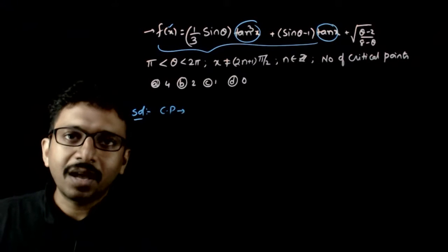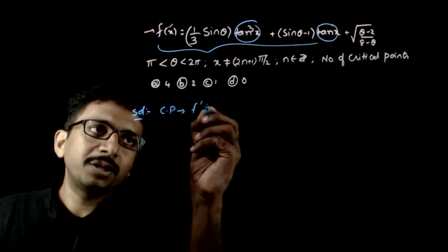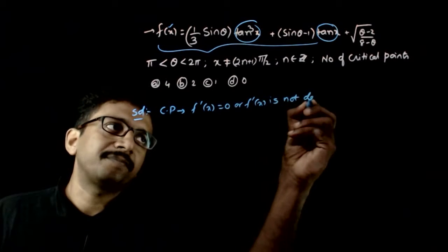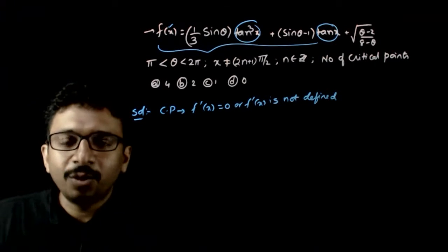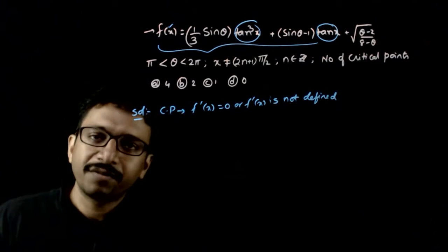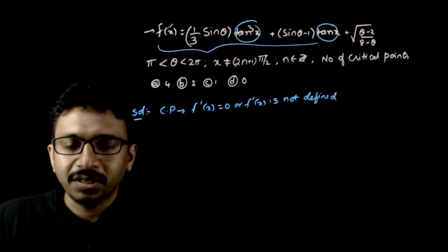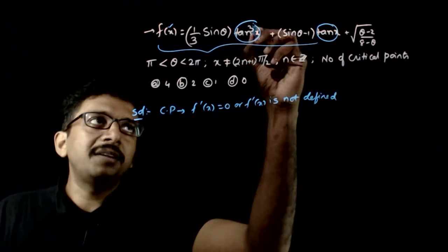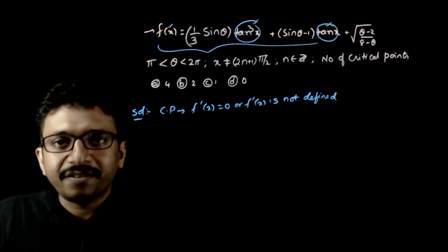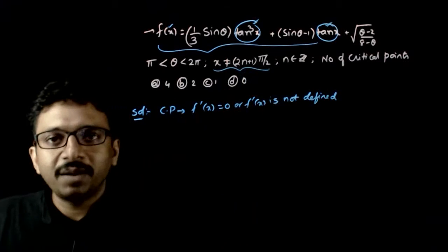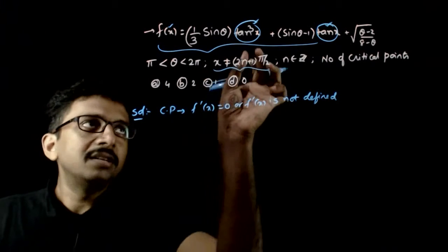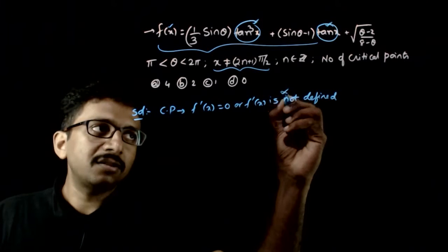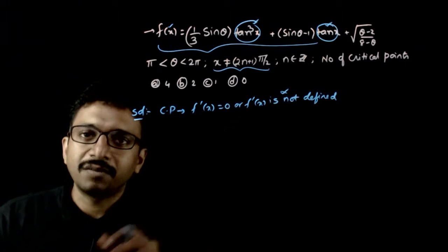What are critical points? Critical points are points in the domain of the function where f'(x) is equal to 0 or f'(x) is not defined. Now, for this function, f'(x) is always defined because tan³x and tan x are differentiable functions within their domains — odd multiples of π/2 are already removed. So we just need to find the points where f'(x) is equal to 0.